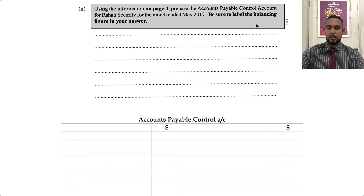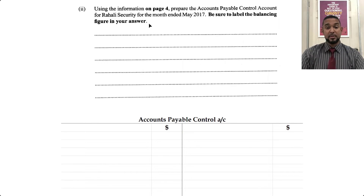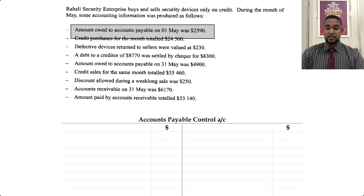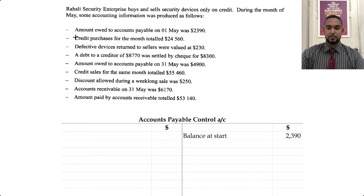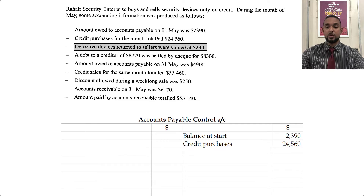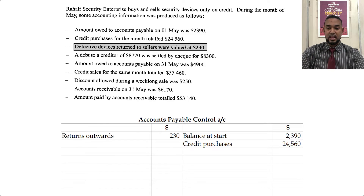They want us to do the accounts payable control account for Rahali. Be sure to label the balancing figure in your answer — so that implies something is missing. Let's go back up to the information and populate the control account. We start with the opening balance on the credit side, because it's a liability and liabilities have credit balances at start. The next item is credit purchases — when you make credit purchases, you owe more money to your creditors, so your liability increases, which is recorded by a credit. Next, defective devices returned to sellers — that's returns outward. When you send goods back, you reduce the liability, so you debit the liability account.